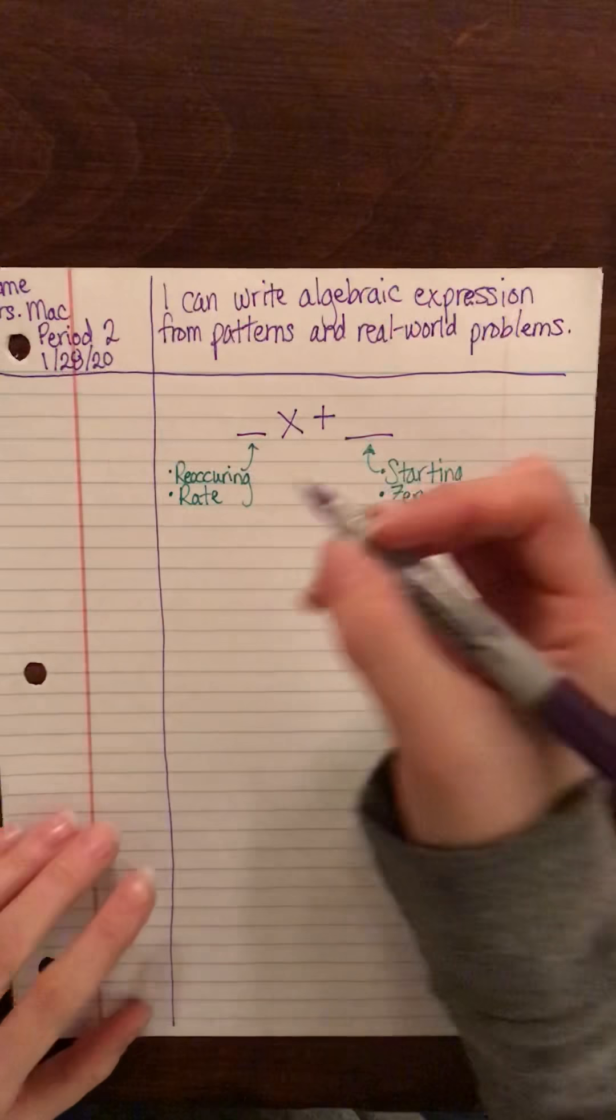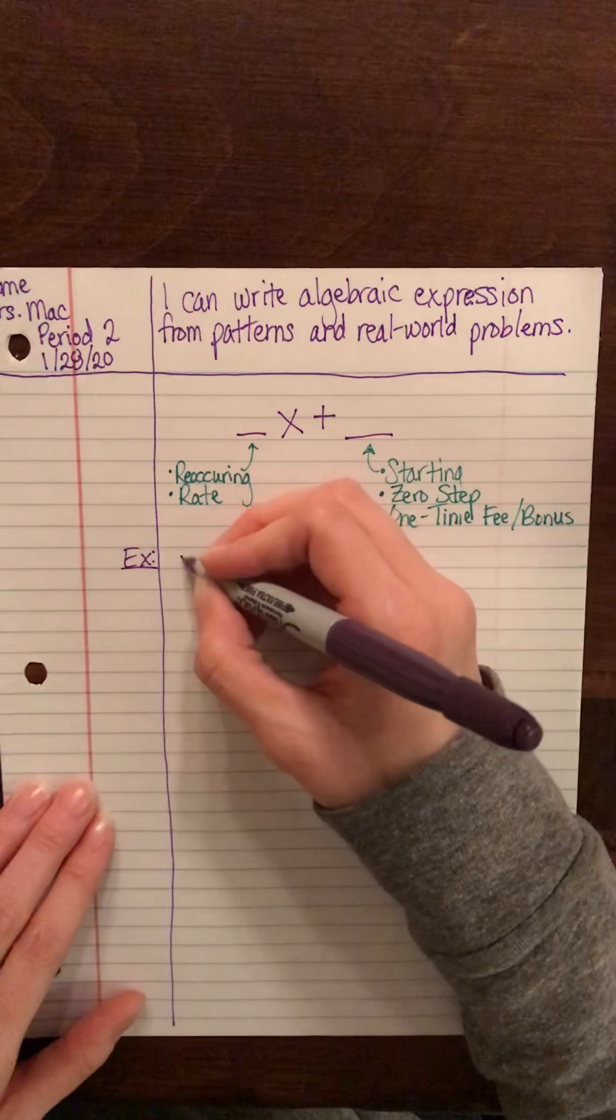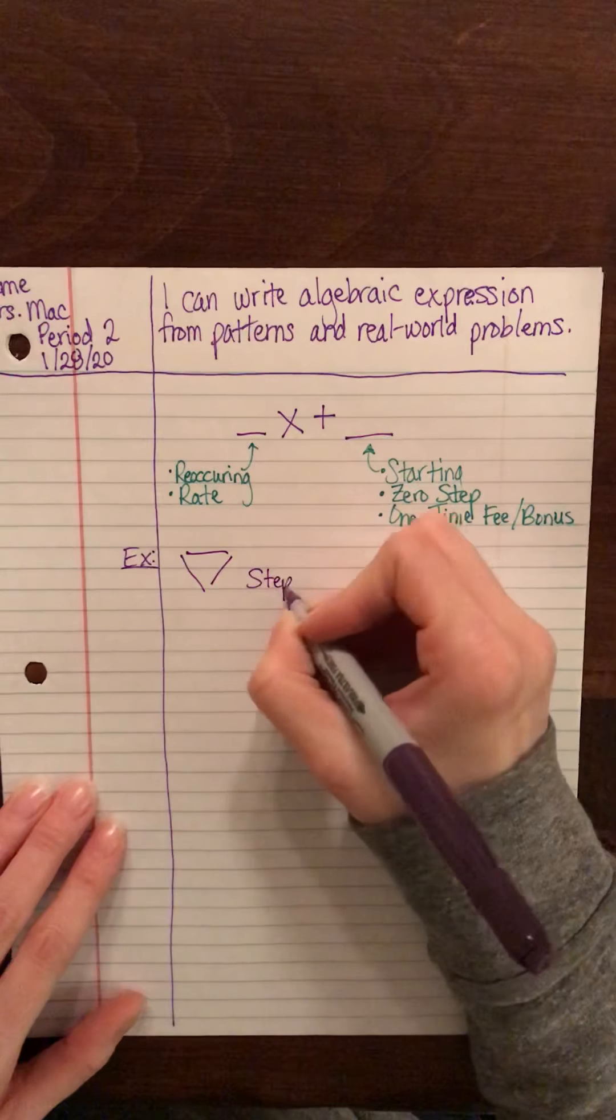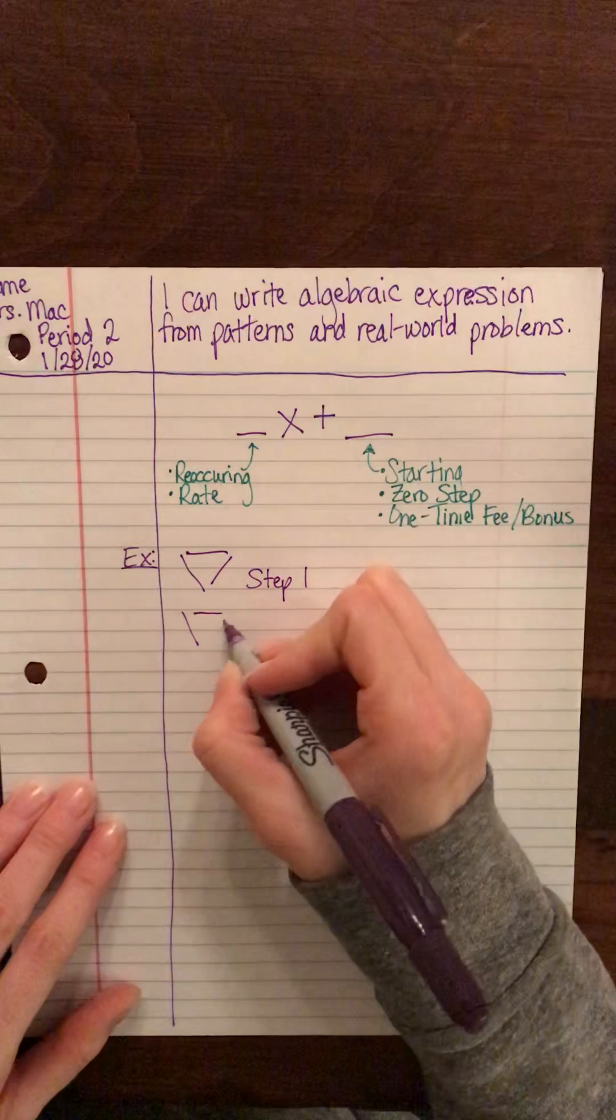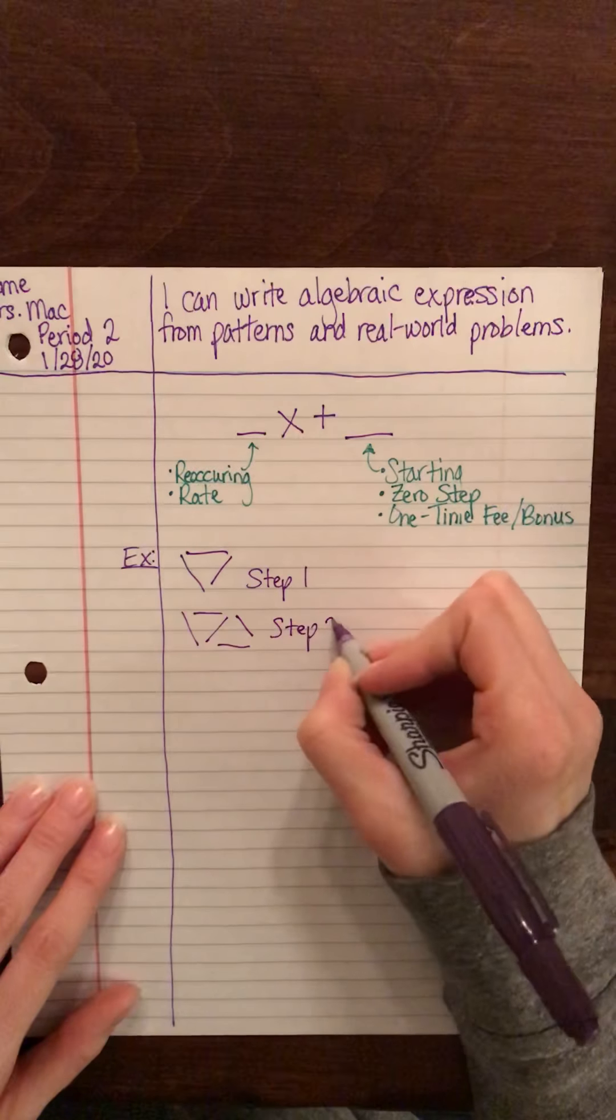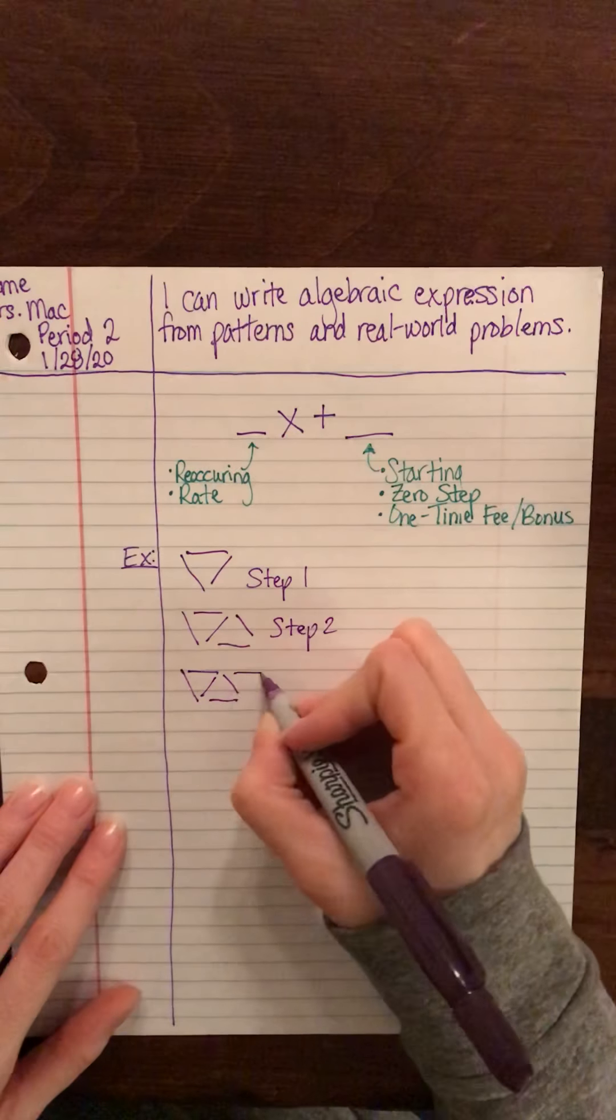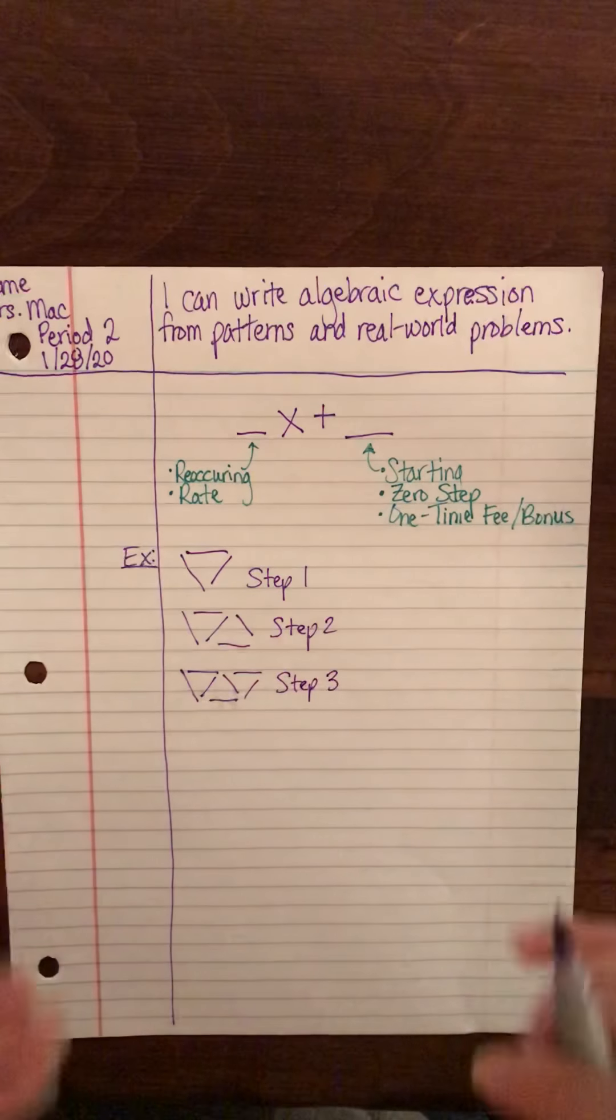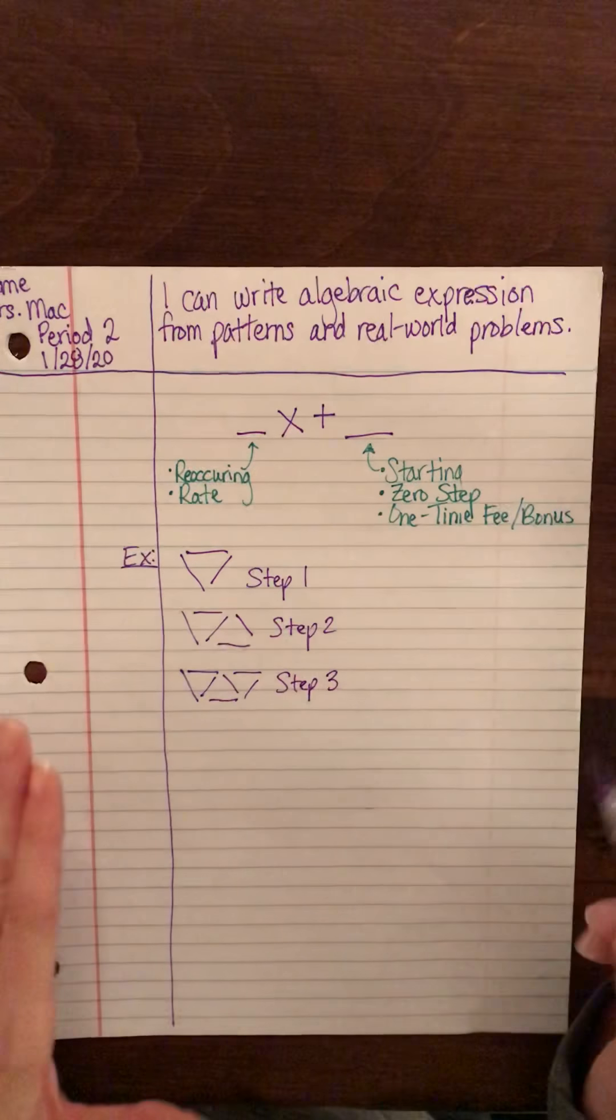So if you look at that problem, it was a triangle problem that looked like this. So this was step one, and then step two looked like this, and then step three looked like this. And what our goal is, is we want to write an algebraic expression for this. So we're going to do a couple things to get us there.